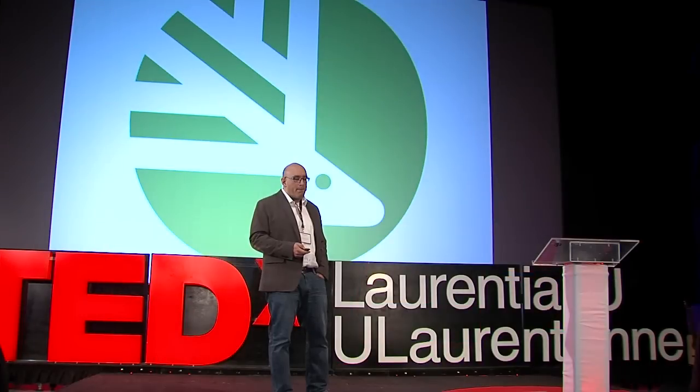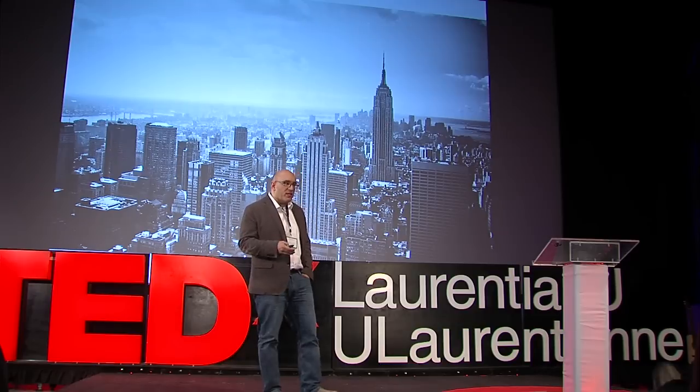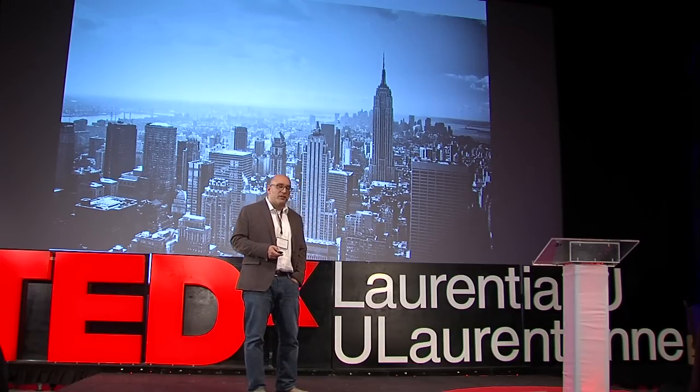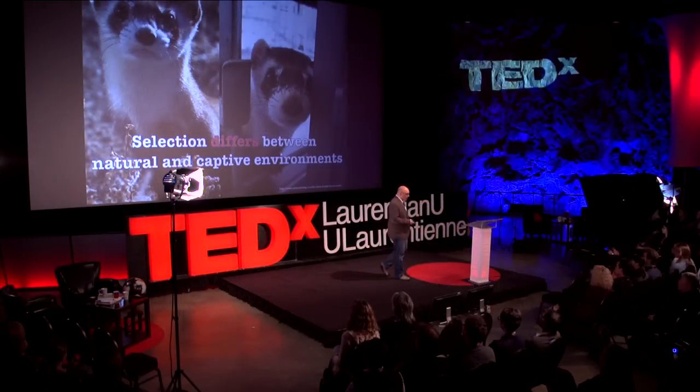The first is what happens in zoos, in captive breeding programs, when we have endangered species in the wild. We collect some from the wild, bring them into captivity, breed them, and then re-release them in the hopes that these animals or plants will continue to propagate in the wild and won't go extinct.